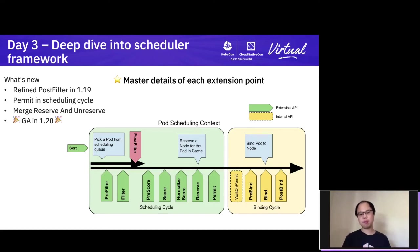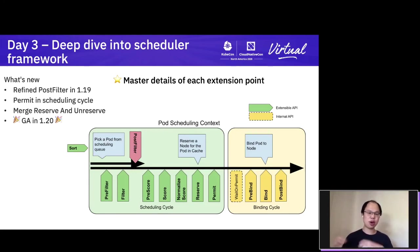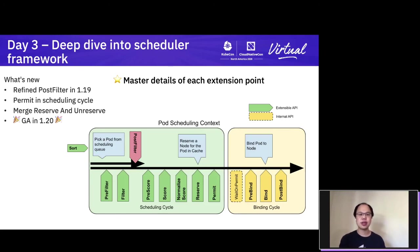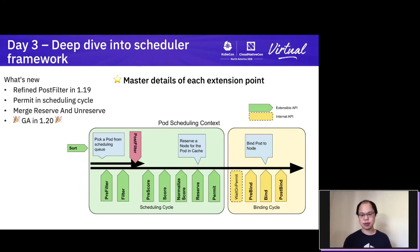PostFilter is a new extension point introduced in 1.19. It replaced the old hard-coded preemption logic, making the preemption logic more extensible. In the default preemption, we consider the strategy to preempt pods on a single node. But sometimes that's not enough — you may want to extend this behavior to preempt a group of pods that may be scheduled onto different nodes. You should also follow up with the latest changes in the scheduling framework and read through the release notes. If you have questions, go to Slack or the mailing list. We are going to GA the scheduling framework in 1.20 — we have been building this framework since 1.15, and now it's stable enough to go to the next stage.